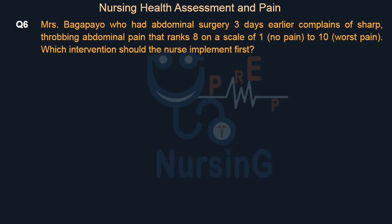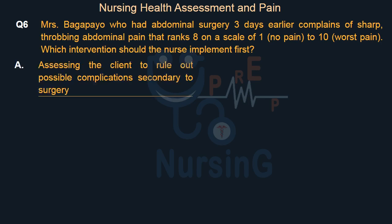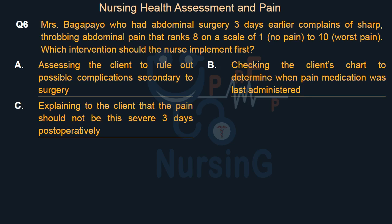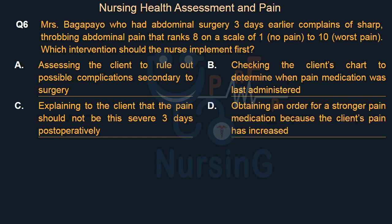Mrs. Bagapayo, who had abdominal surgery three days earlier, complains of sharp, throbbing abdominal pain that ranks 8 on a scale of 1 (no pain) to 10 (worst pain). Which intervention should the nurse implement first? Option A: Assessing the client to rule out possible complications secondary to surgery. Option B: Checking the client's chart to determine when pain medication was last administered. Option C: Explaining to the client that the pain should not be this severe three days post-operatively. Option D: Obtaining an order for a stronger pain medication because the client's pain has increased.